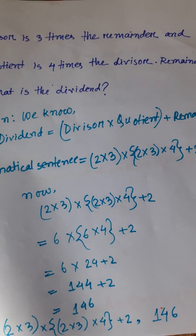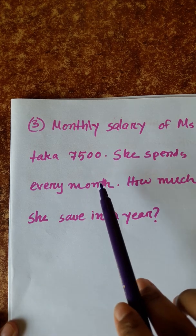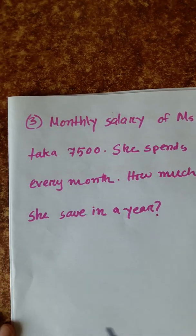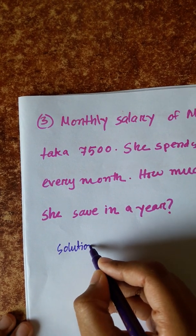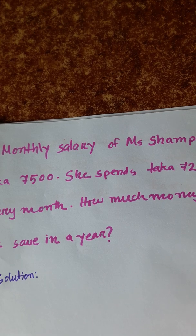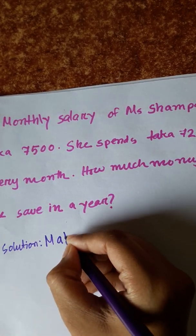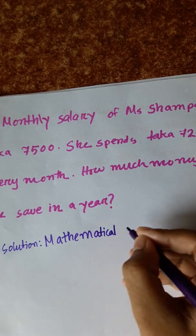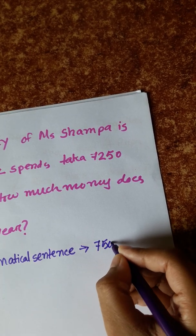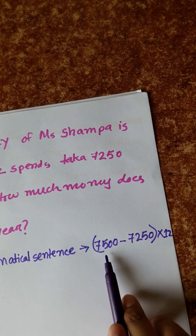Next: Monthly salary of Miss Shampa is Taka 7500. She spends Taka 7250 every month. How much money does she save in a year? The mathematical sentence is: (7500 minus 7250) into 12, because we subtract monthly expenditure from monthly income, then multiply by 12 months.